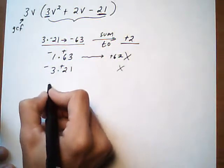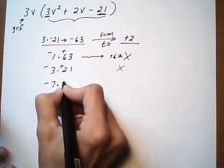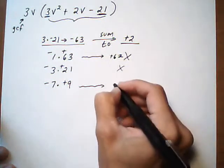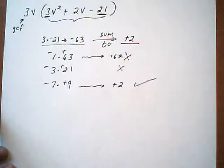And so we keep going. 4, 5, 6 don't work. Let's do 7. Minus 7 times positive 9. And that sum works. That gives us a positive 2. That's the one we want.